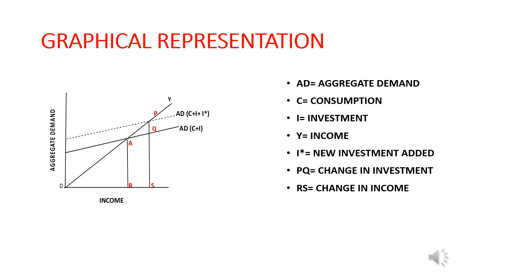We can clearly see that the change in income is greater than the change in investment in the economy. This justifies the point made by Keynes' multiplier: when an additional dose of investment is given to the economy, it results in a larger or manifold increase in aggregate income.